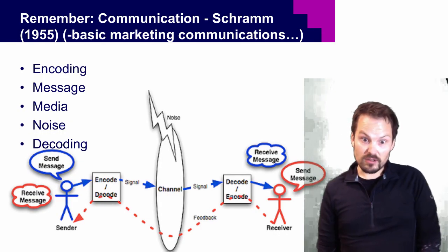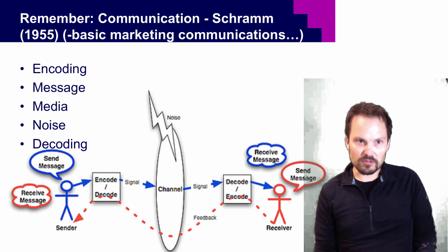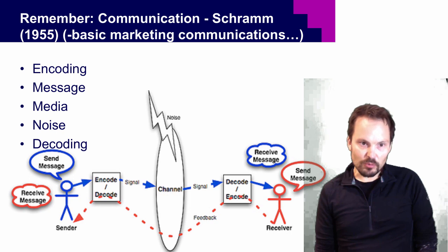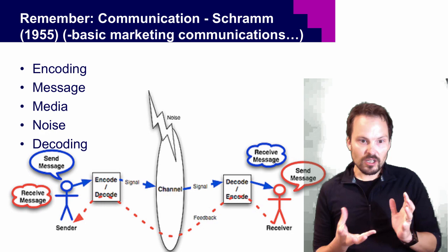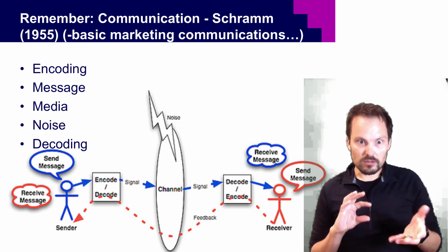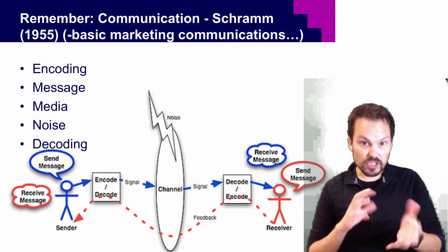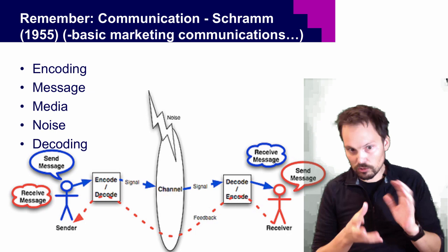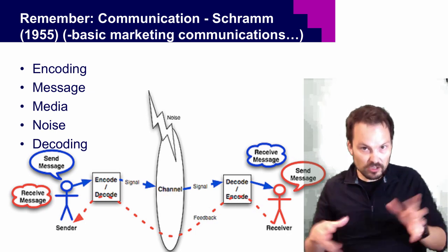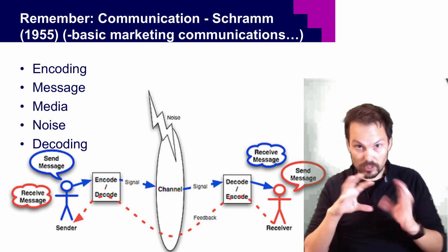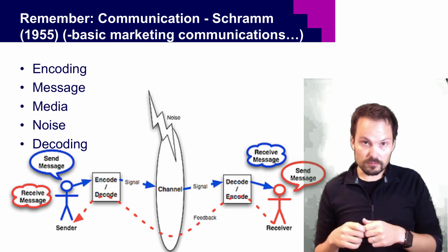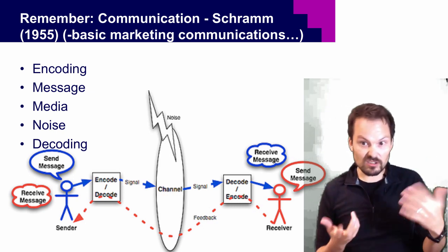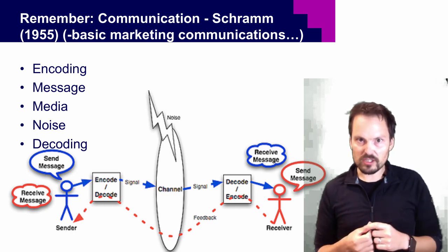Most of you will probably be familiar with this framework — this is the old communication model from the mid-1950s. If you're not familiar with it, you should read up a little bit. The traditional communications model is that there's a sender who sends out a message that is encoded or decoded through the media and the channel used, such as television. The encoding is the function of actually making that television ad, and the noise is of course other ads on television. The receiver then sees and decodes the message.